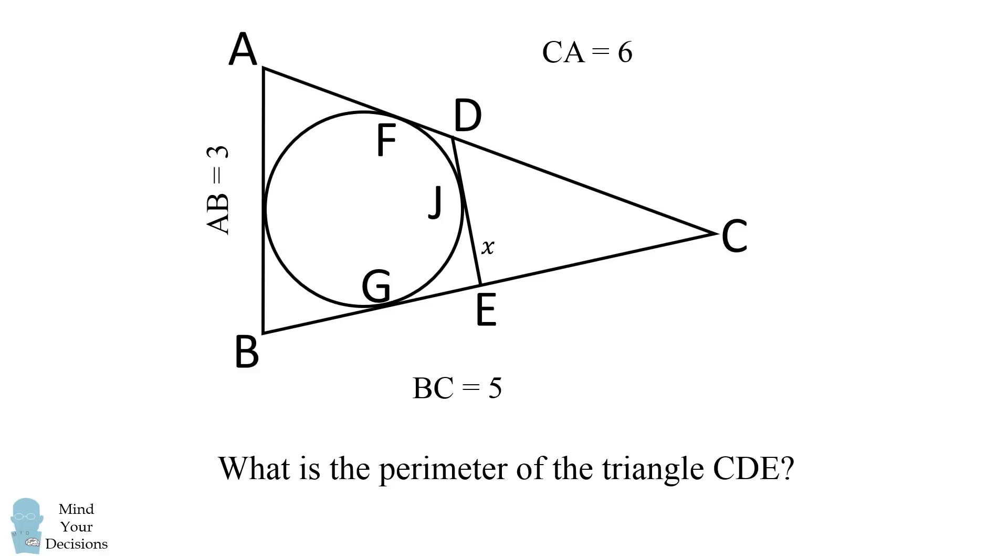Now suppose EJ is equal to X. By the principle of equal tangents, GE is also equal to X. Suppose that DJ is equal to Y. By the principle of equal tangents, DF is also equal to Y. So if we want to calculate the perimeter of triangle CDE, this will be CD plus CE plus the length of DE. This will be equal to CD plus Y plus CE plus X. But we know that CF is equal to CD plus Y and CG is equal to CE plus X.